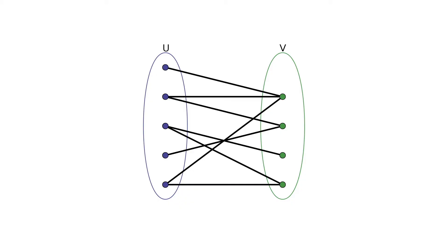For a bipartite graph from the previous module, a valid dominating set involves picking all the vertices on one of the two sides. To get the smallest dominating set, you simply pick the smaller of the two sides. This already guarantees that on connected bipartite graphs you always have a dominating set of at most half the vertices, since at least one side must have at most half.